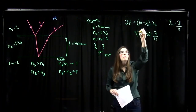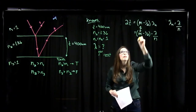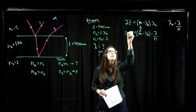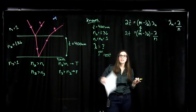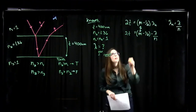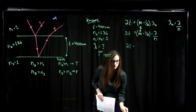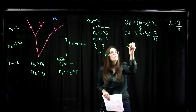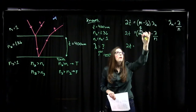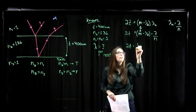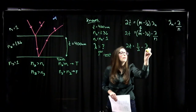M is equal to 1, because we are looking for the first constructive interference. Substituting M equals 1: 2T equals (1 minus one-half) times lambda over N, which simplifies to 2T equals one-half times lambda over N.